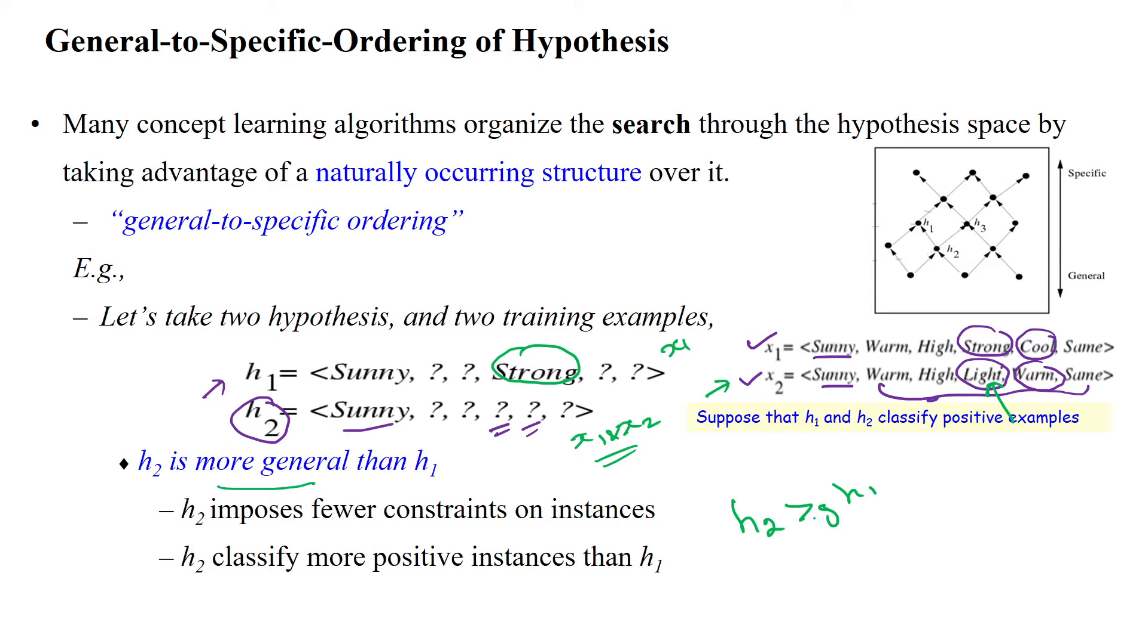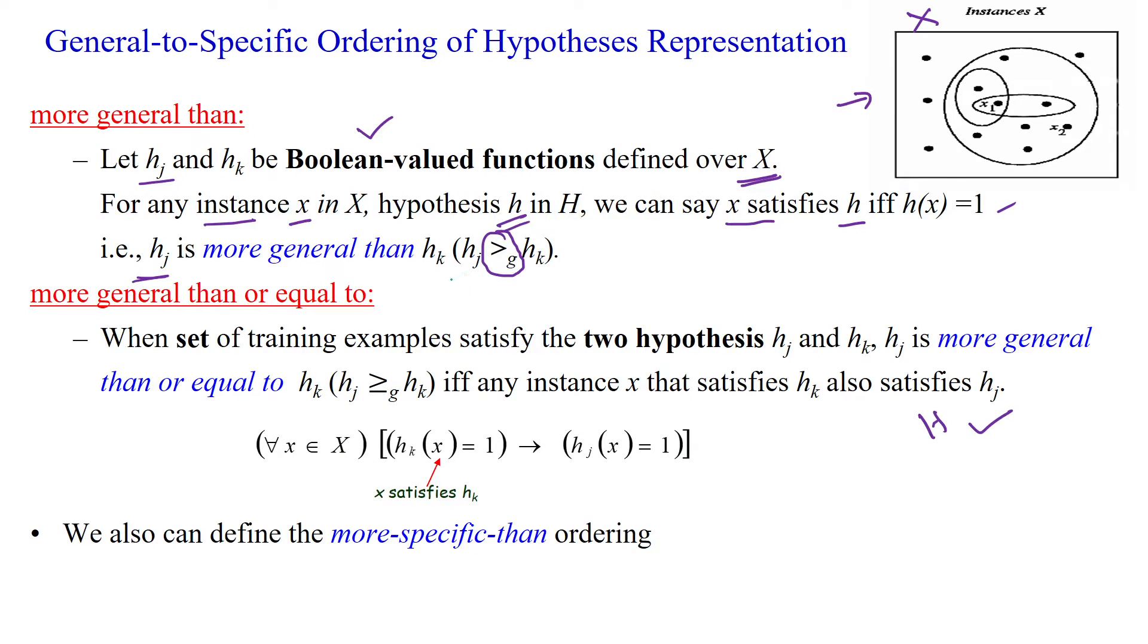That is the notation we have used, h_j is more general than h_k. And one more thing is more general than or equal to, when set of training examples satisfy the two hypotheses h_j and h_k.